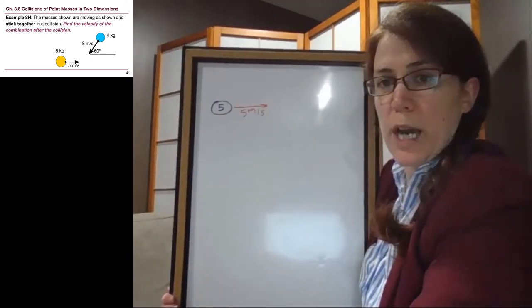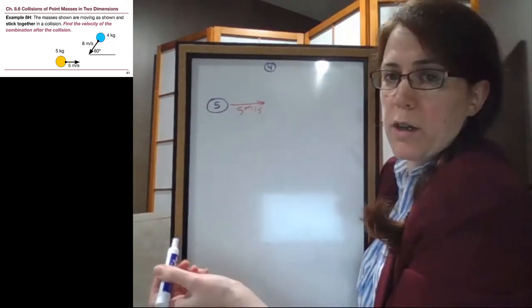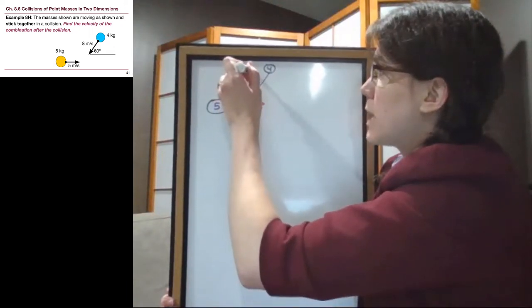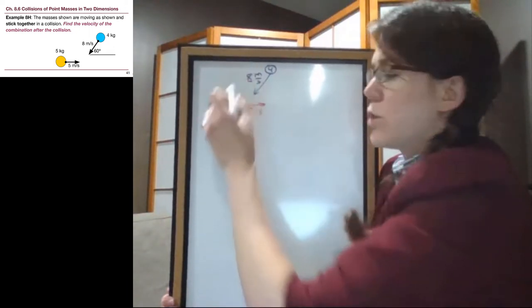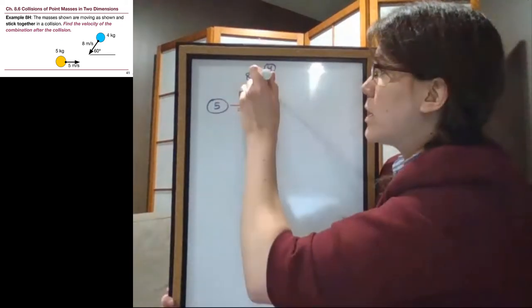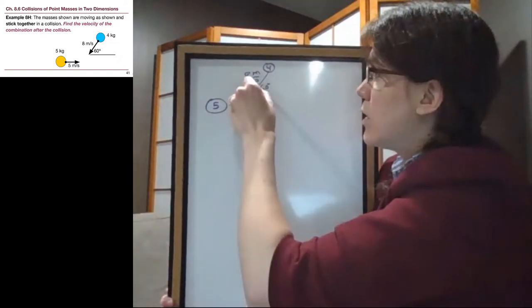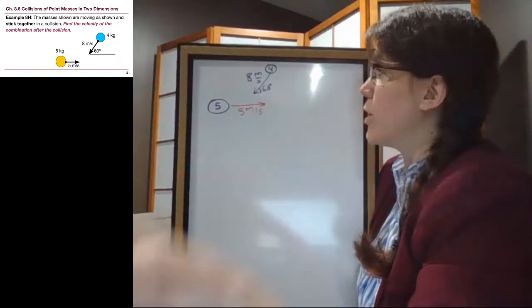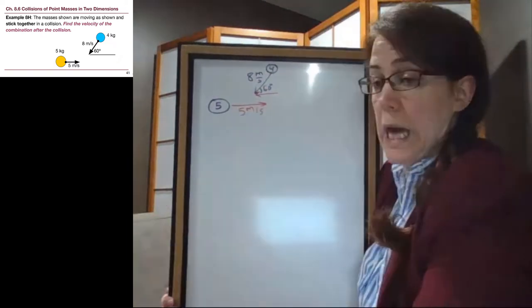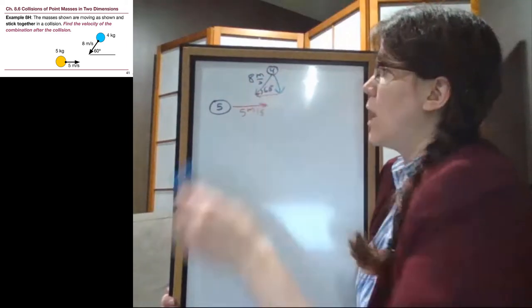We also have the 4-kilogram block here, or puck, and it is moving at 8 meters per second. And they're on a collision course. They will hit each other. And the key thing is that we are given this 60-degree angle, which is down here in the bottom corner. So this block is moving to the left instead of the right, and it is moving down and not up.